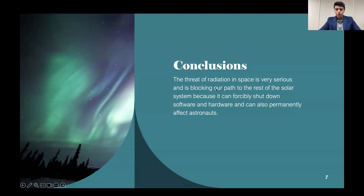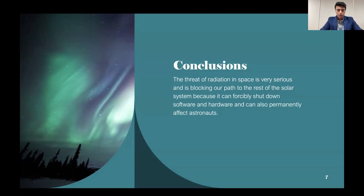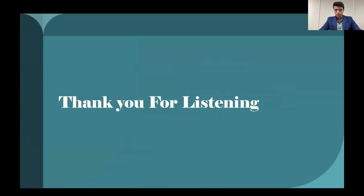In conclusion, the threat of radiation in space is very serious and is blocking our path to the rest of the solar system. There are ways to protect our spacecraft from it, but most of those are very unreliable or very difficult to achieve. Thank you for listening. Any questions?